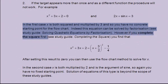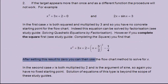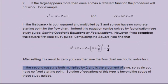After setting this result to 0, you can then use the flow chart method to solve for x. In the second case, x is both multiplied by 2 and is the argument of sine. So again, you have no fixed starting point. Solution of equations of this type is beyond the scope of these study guides.